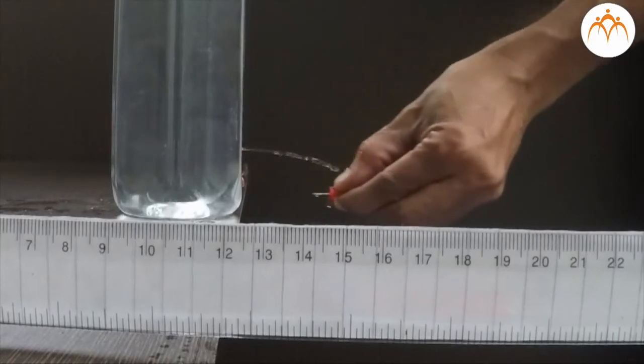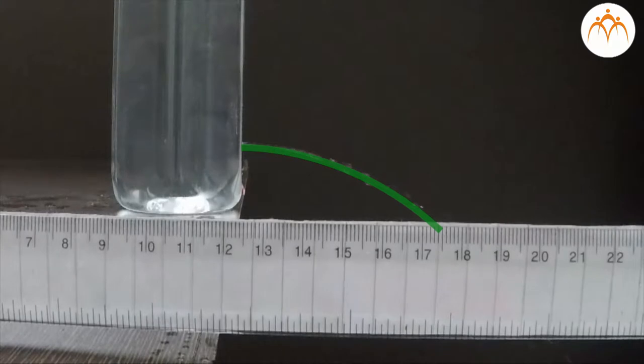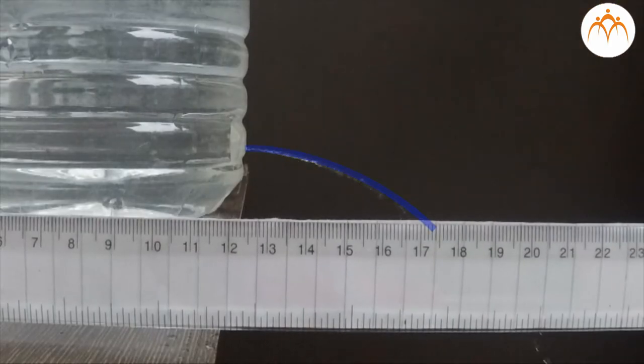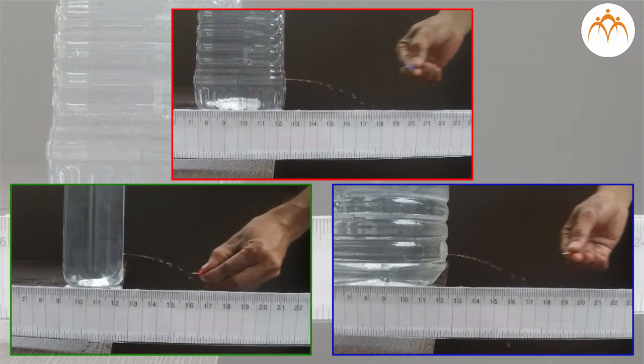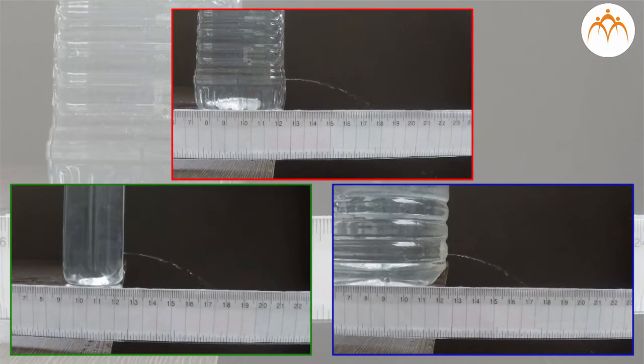From which container water will come out at higher speed? None. Water comes out at equal speed from all the containers. We can say that pressure depends on the height of the water column and not on the shape of the container.